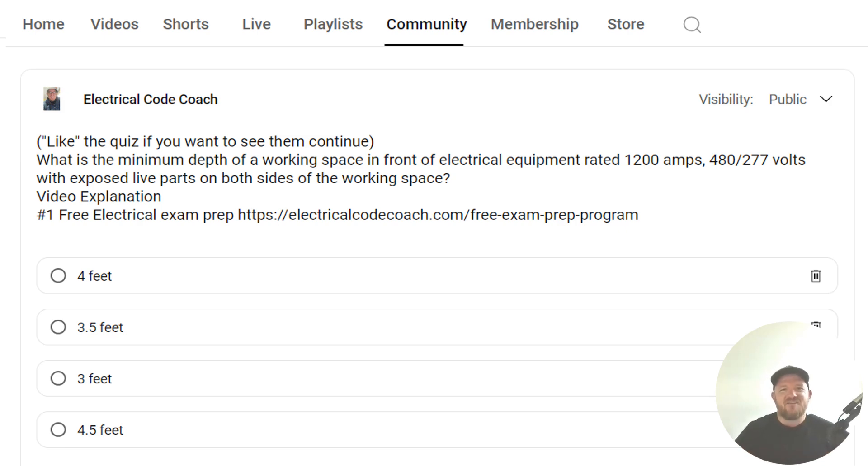Hey everyone, welcome back. I am the Electrical Code Coach, and this is the electrical question of the day. What is the minimum depth of working space in front of electrical equipment rated 1200 amps, 480/277 volt with exposed live parts on both sides of the working space?